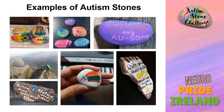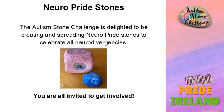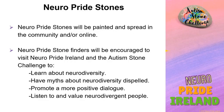There are some examples of Autism Stones made by Autism Stone Challengers. Autism Stone Challenge is delighted to be creating and spreading NeuroPride stones to celebrate all neurodivergencies. We would love for you all to get involved. NeuroPride stones will be painted and spread in the community and/or online. NeuroPride stone finders will be encouraged to visit NeuroPride Ireland and the Autism Stone Challenge to learn about neurodiversity, have myths about neurodiversity dispelled, to promote a more positive dialogue and to listen and value neurodivergent people.